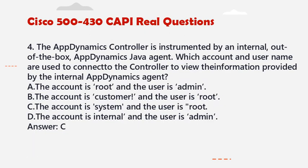Question 4: The AppDynamics controller is instrumented by an internal, out-of-the-box AppDynamics Java agent. Which account and user name are used to connect to the controller to view the information provided by the internal AppDynamics agent? A. The account as root, and the user as admin. B. The account as customer, and the user as root. C. The account as system, and the user as root. D. The account as internal, and the user as admin. Answer: C.